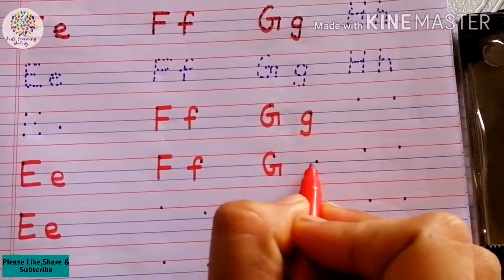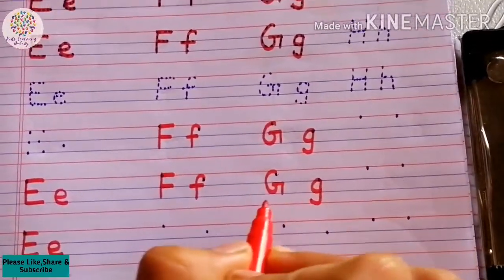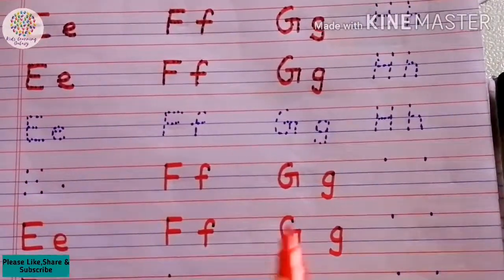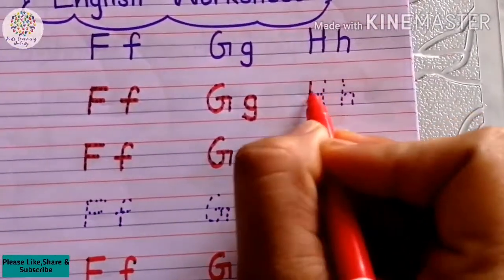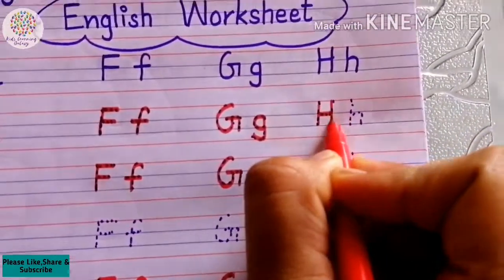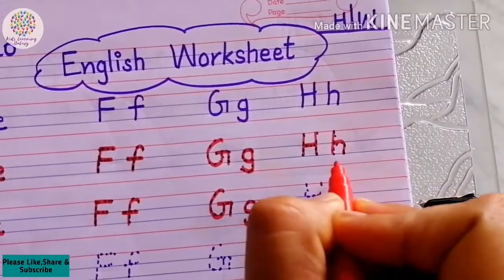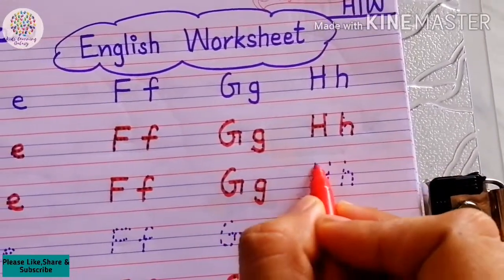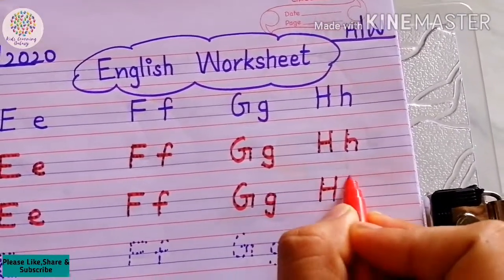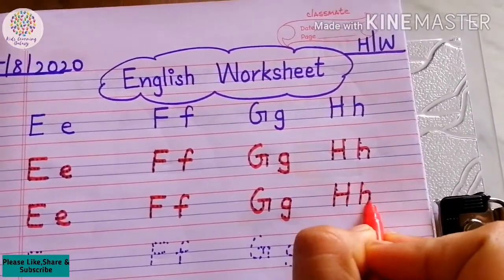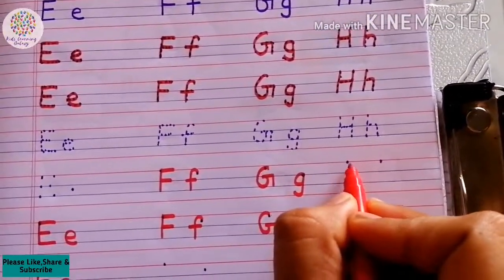Now come to the H. Mama H is capital H, Baby H is small h. Mama H, Baby H. Now come to the single dot.